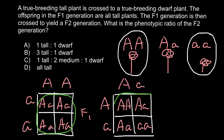So as you can see, three quarters would be phenotypically tall and one quarter would be phenotypically small plants. So the ratio is going to be three to one — three tall to one dwarf. The correct answer is answer B.